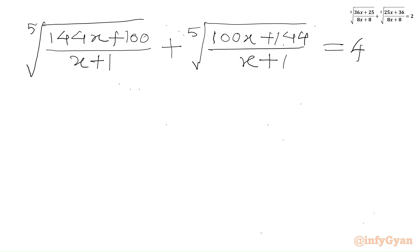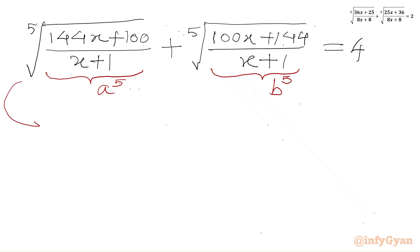Now we will consider our first radicand equal to A to the power 5, and the second radicand we will call B to the power 5. So the very first equation we can write as: fifth root of A to the power 5, which is A, plus fifth root of B to the power 5, which is B, equals 4.